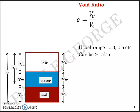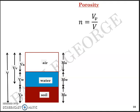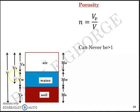The next term is porosity. Porosity n is equal to volume of voids divided by total volume, and it can never be greater than 1. When the volume of voids increases, the total volume in the denominator increases correspondingly, so everything balances out and porosity never exceeds 1.